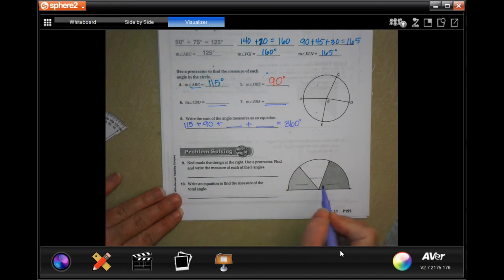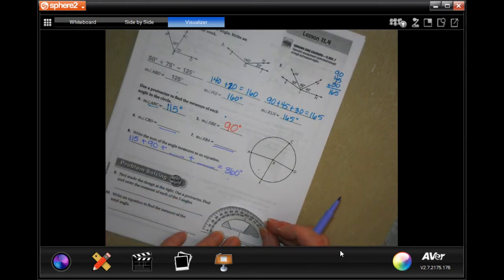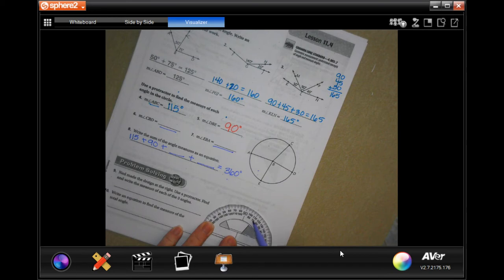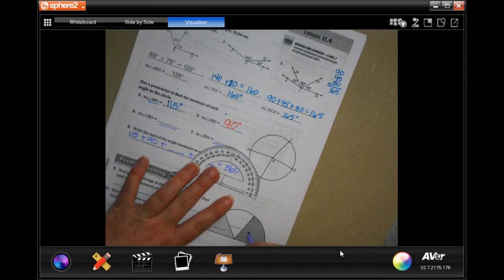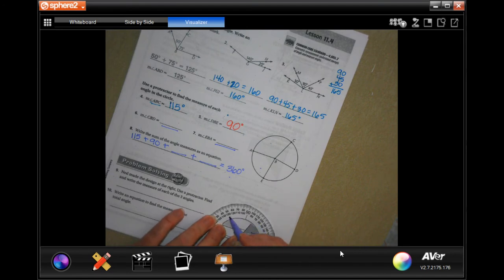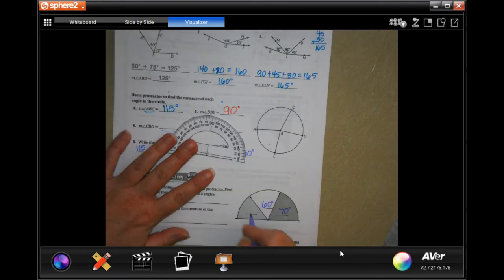All right. Ned made a design, the design at the right. Use a protractor to find and write the measure of each of the three angles. So I'm going to go ahead and put that right there in the middle. This one, you'll notice that they swap right here. So if it's on this side, we're using the inside. If it's on this side of 90, we're using the outside. So this circle is going to go to 70. This side is going from 70 to 130. Well, 130 minus 70 is 60. And then this one, if we just go to the outside one, it's at 50.